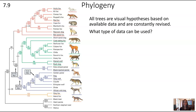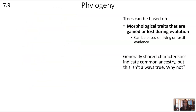All trees are visual hypotheses — not necessarily things we know absolutely for sure. We're trying to puzzle through this based on the data we have, so they are constantly revised as we get more data. What types of data can be used to construct cladograms and phylogenetic trees?